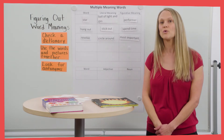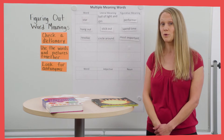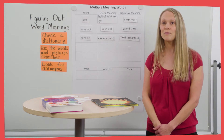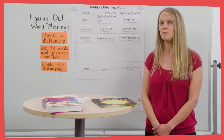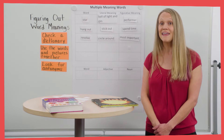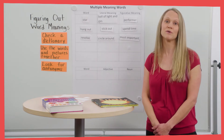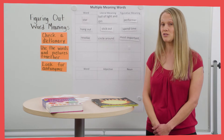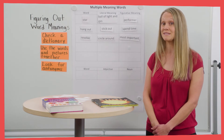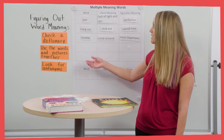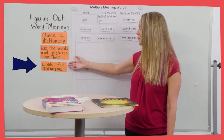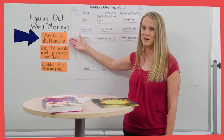Now that we've done a quick review of figurative and literal word meanings, let's continue our chart challenge with the rest of the book. Today, we're going to continue finding more multiple meaning words and phrases to add, and this time we're going to think more about how to determine what they mean. Remember that some strategies we can use include using the words and pictures together, looking for antonyms, and checking a dictionary.